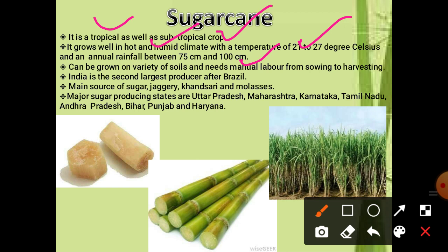Sugar cane can be grown on a variety of soils and needs manual labor from sowing to harvesting. It is also called an annual crop because it requires about one year for growing and ripening. India is the second largest producer after Brazil. It is the main source of sugar, jaggery, khandsari and molasses. Major sugar-producing states are UP, Maharashtra, Karnataka, Tamil Nadu, Andhra Pradesh, Bihar, Punjab and Haryana.